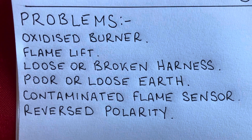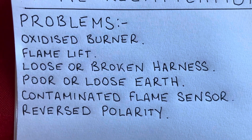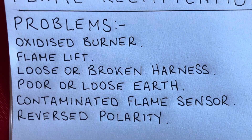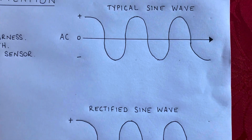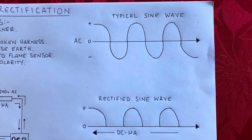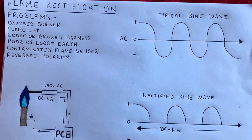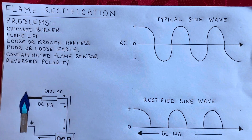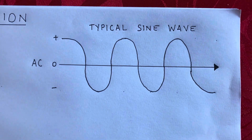The last main cause is reverse polarity — that's when your live and neutral are crossed. It's a bit like crossing the flow and return pipes on a central heating system: the water still flows, just the opposite way around. With reverse polarity your 240 volts is coming in on the neutral and going back on the live instead of the other way around.